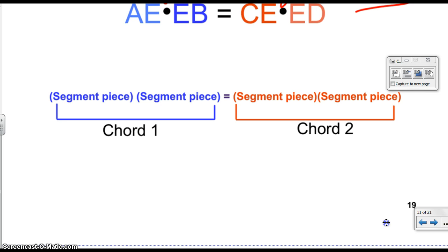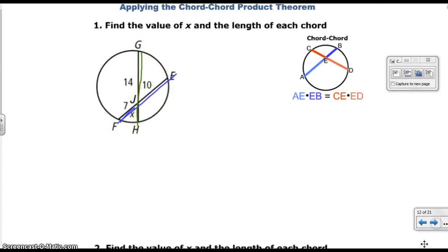Applying the chord-chord product theorem, we're going to find the value of x and the length of each chord. First, let's find the value of x. So, if we look at our picture here, it looks like we have chord FE and chord GH.